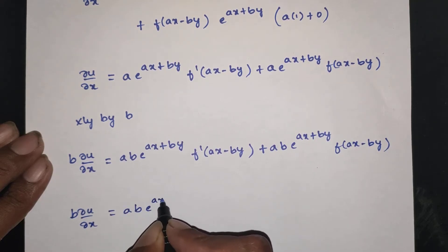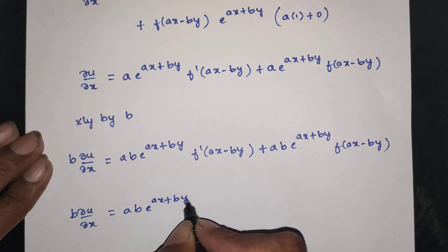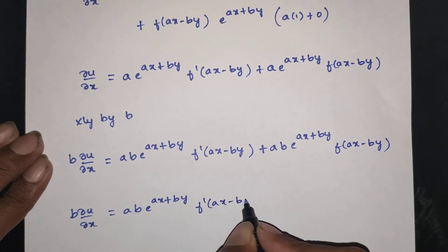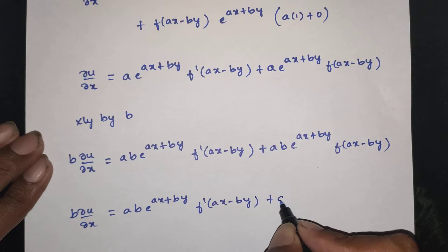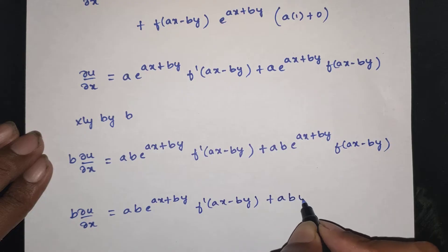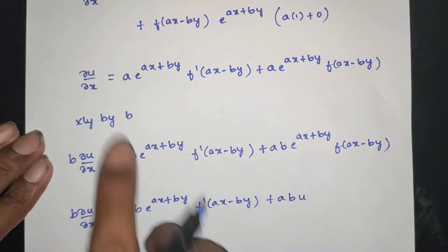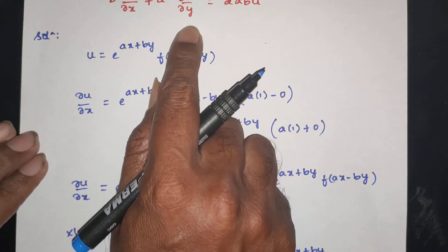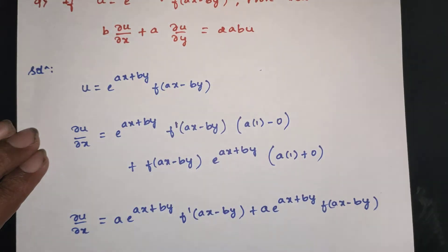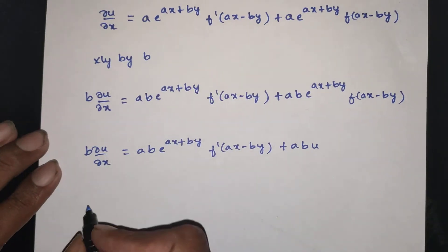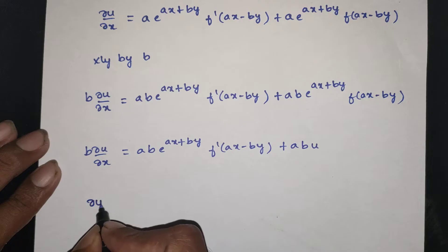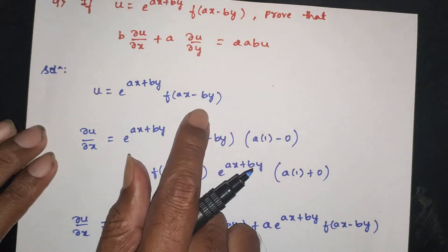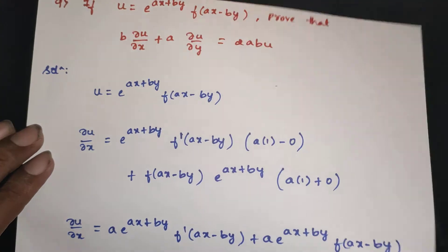So b into ∂u/∂x gives ab·e power ax plus by, f of ax minus by, plus ab·u. This is the first part on the workbook.